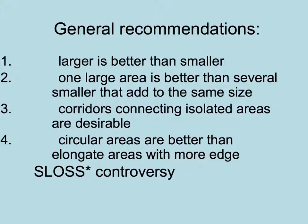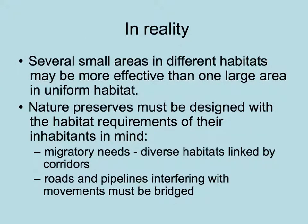Corridors connecting isolated areas are very desirable, and circular areas are better than elongated areas with more edge. However, some people disagree, leading to what's called the SLOSS controversy — Single Large Or Several Small. Some ecologists argue that several small areas in different habitats in a region may be more effective than one large area in uniform habitat for conserving greater amounts of biodiversity. Also, not putting all your eggs in one basket means one small site hit by disaster won't eliminate everything. Nature preserves should be designed with habitat requirements of the resident species in mind.